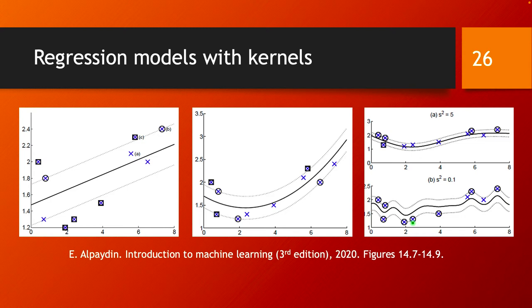In these pictures, the first is a standard regression, the second is using a quadratic kernel, and the third is using a Gaussian kernel with two different spreads.